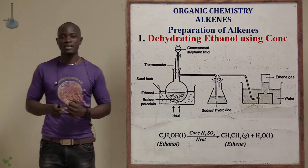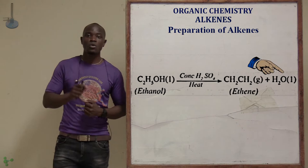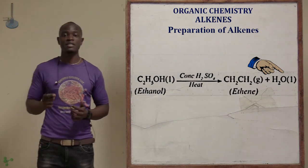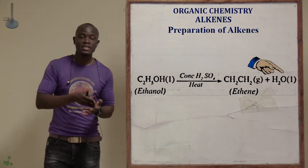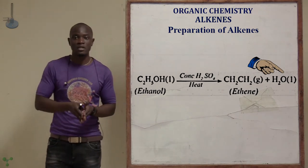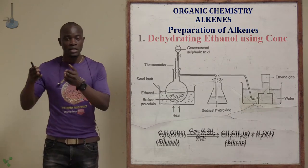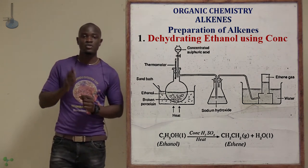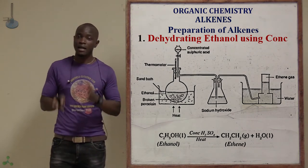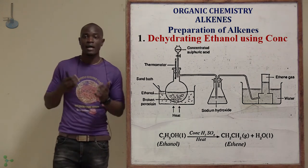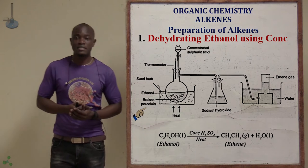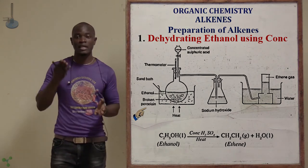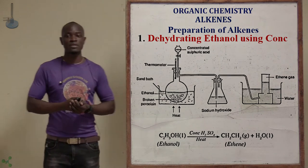When ethanol and concentrated sulfuric acid is heated at 160 degrees Celsius, water will be removed from the ethanol. The ethanol at 160 degrees Celsius will be dehydrated — water will be removed by the heat and the sulfuric acid — whereby the ethanol will be reduced to a thin gas and we will also form traces of water molecules. The broken porcelain or sand in the experiment is used to absorb excess heat in order to prevent bursting or cracking of the apparatus during heating.